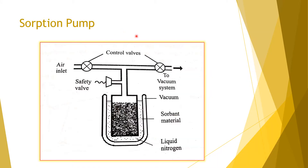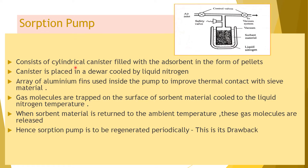This is the diagram of a sorption pump. There are different valves to control its working, including a safety valve. This is the inlet port and the outlet port to the vacuum system. A vacuum gauge is placed between the canister and the liquid nitrogen container, and the sorbent material is located between them. The pump consists of a cylindrical canister filled with the adsorbent in the form of pellets.